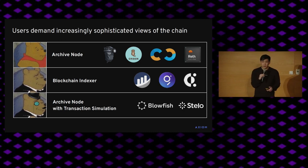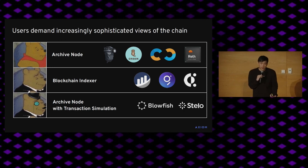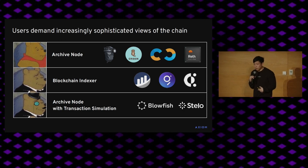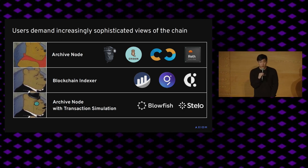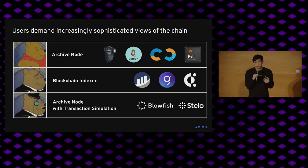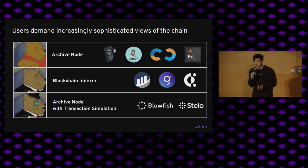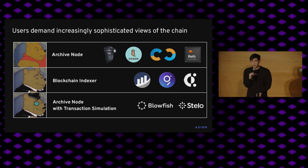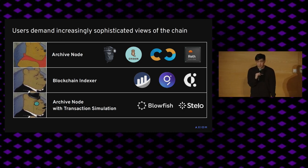We're now seeing a new wave of different ways to look at the chain that give very context-specific information. For example, there are wallets like Blowfish and Stello that will actually simulate a transaction you're about to run on top of the current state of the chain to see if you're actually getting hacked and going to lose all your NFTs. The general trend here is for users to view the chain with more and more processing on top.